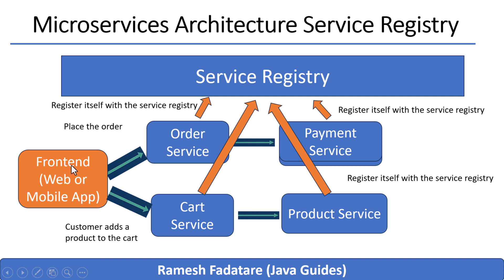Later, the customer proceeds to checkout. The order service is triggered — it needs to charge the customer's card, so it reaches out to the payment service. Again, it doesn't hard-code anything. It asks the registry for the location of the payment service, connects to it, and completes the payment. All of this happens in real time, and every service stays decoupled — no one needs to know where anyone else lives. They just ask when they need to.